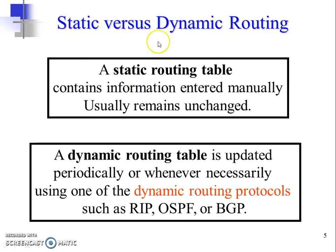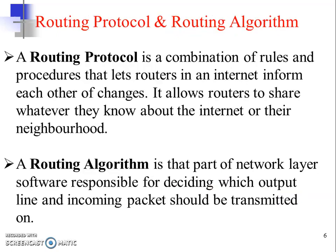In summary, a static routing table contains information which is entered manually and usually remains unchanged, whereas a dynamic routing table is updated periodically depending upon real-time changes on the network. Dynamic routing takes place with the help of various protocols such as RIP, OSPF, or BGP. These protocols will be covered in detail in the next video lectures.